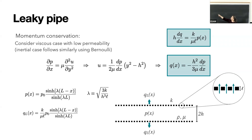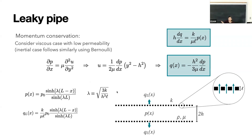I solve for P, plug it into Darcy's law, and get Q_leak. There is a mystery parameter lambda in here - an inverse length scale - and lambda depends on K, my permeability. I don't yet know how K relates to the geometry of the manta - parameters H and L. So the last thing is to find K.